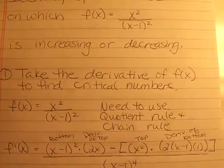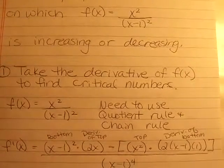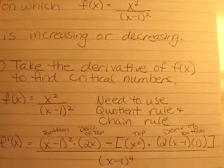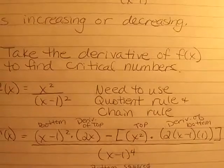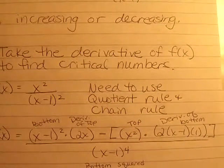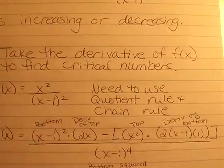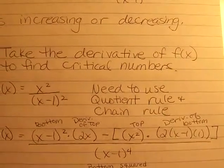So first, we're going to start with the quotient rule, and that means you take the bottom term and bring it up, you multiply that by the derivative of the top, you're going to minus that by the top term times the derivative of the bottom.